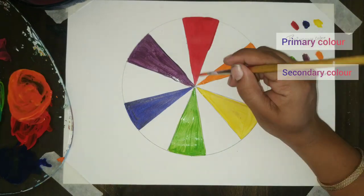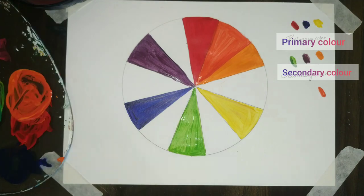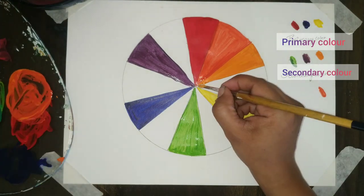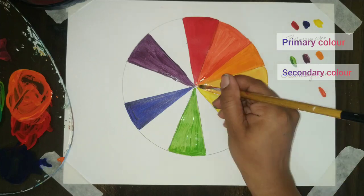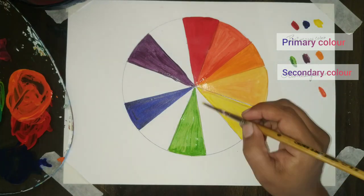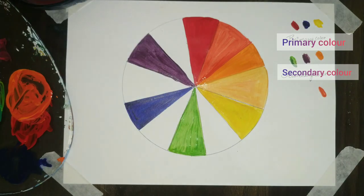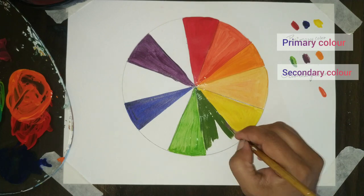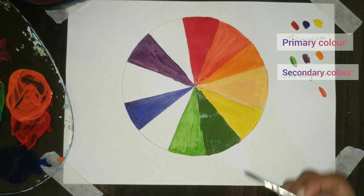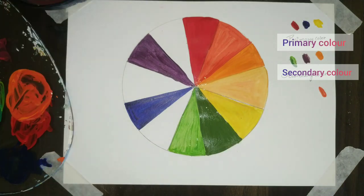Tertiary colors are mix of two colors. One primary and one secondary. First red and orange would be reddish orange. Yellow and orange would be ochre. Yellow and green would be sap green. It means mehendi green, sap green, olive green.